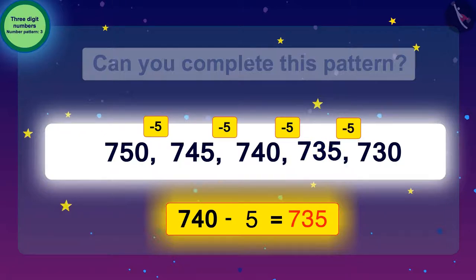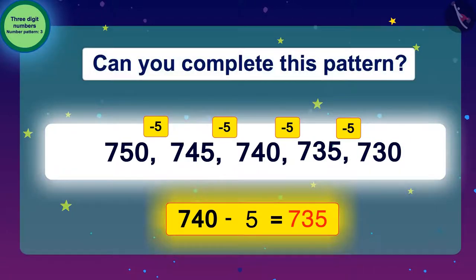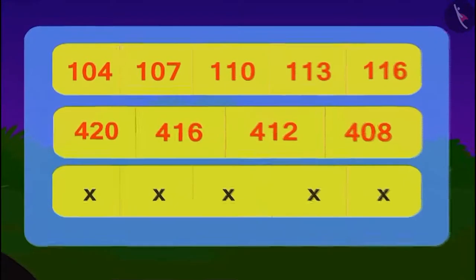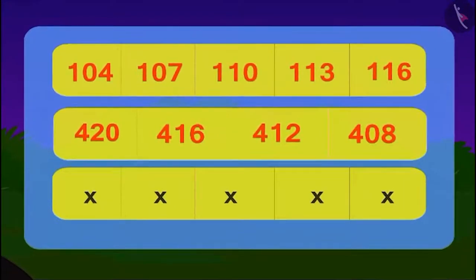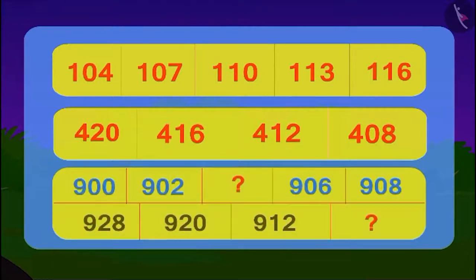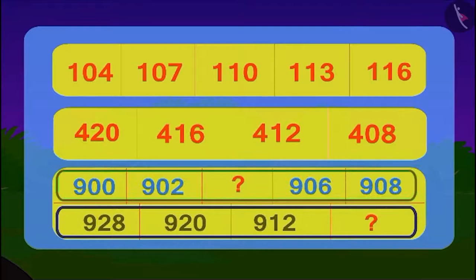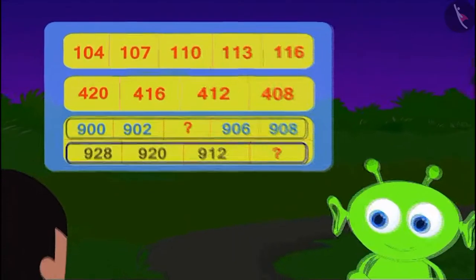If we subtract 5 from 735, we get 730, which is already given. Children, could you also identify the pattern? Let's see what is the next code given by the alien. Oh no — we can see two different number patterns here this time!